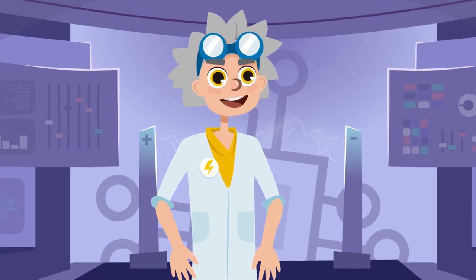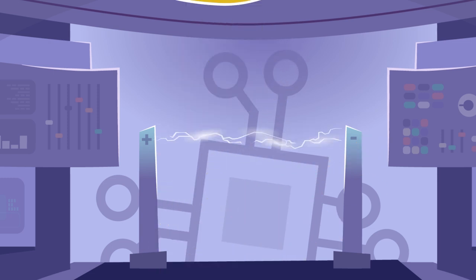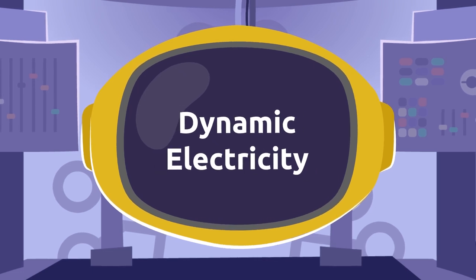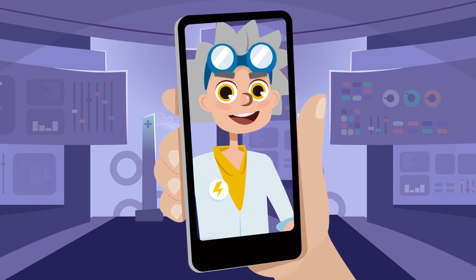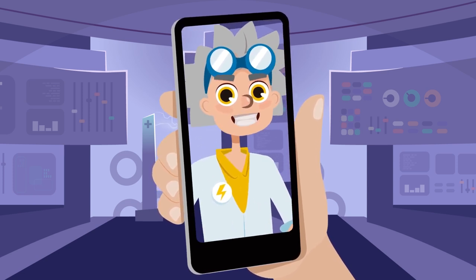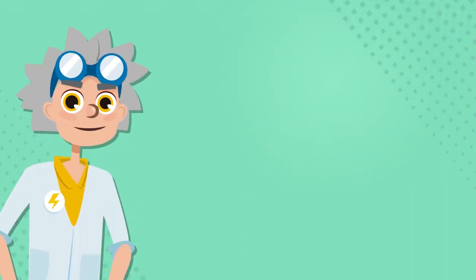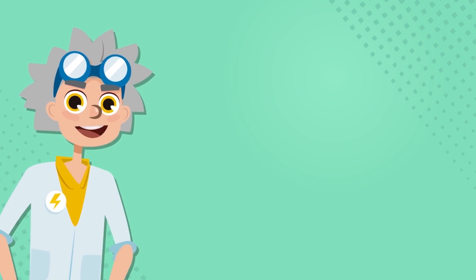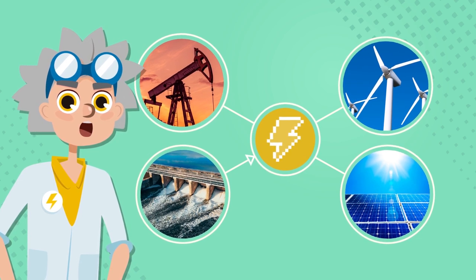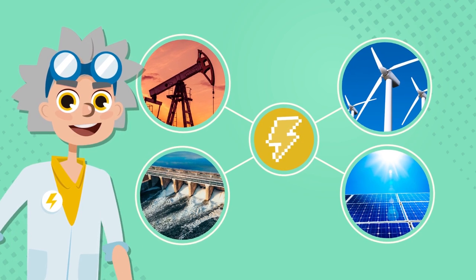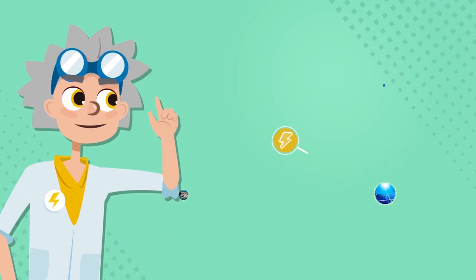Now that we know what static electricity is, let's look at dynamic electricity. Static electricity only lasts a short time. Obviously we can't use it to charge our cell phones or turn on a lamp. We need to obtain a different type of electricity using the natural resources around us. As I explained to you in our last video, the electricity we receive at home to run our electronic devices is called dynamic electricity.